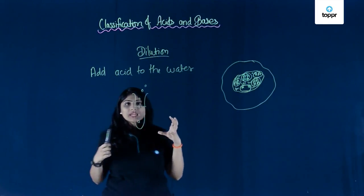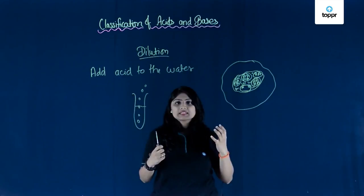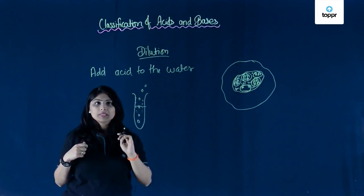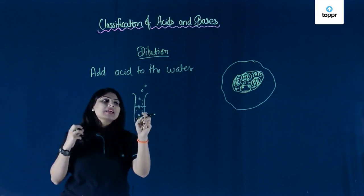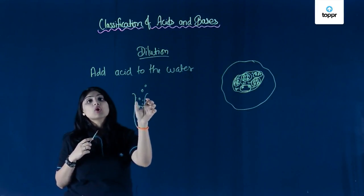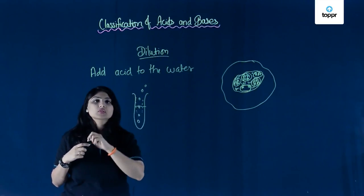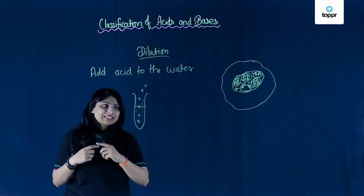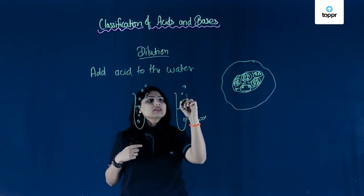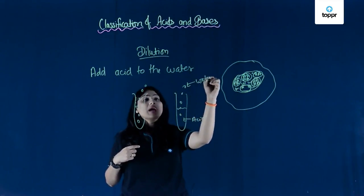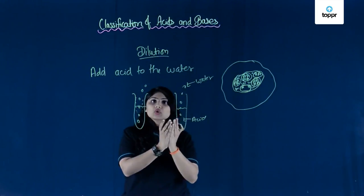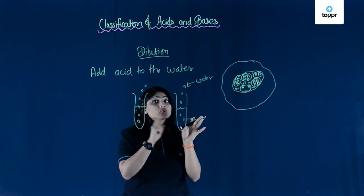I have to continuously stir. Remember, whenever acid and water come together, a lot of heat is evolved. This heat would be absorbed by the cold surface of the water. And since we are adding acid drop by drop, the heat evolved will not be much. But if we have acid and add water to it, a lot of heat will come out and will not be absorbed, causing the mixture to splash out and cause burns on your hand.